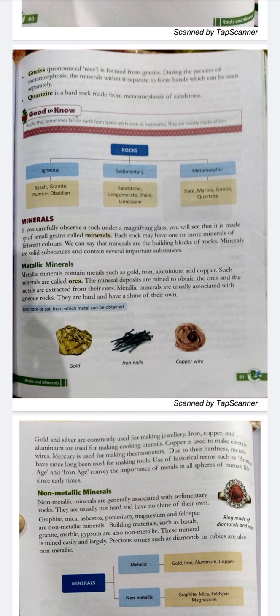Minerals are of two types: metallic minerals and non-metallic minerals. Metallic minerals contain metals such as gold, iron, aluminium, and copper. Such minerals are called ores. The mineral deposits are mined to obtain the ores and metals are extracted from their ores.